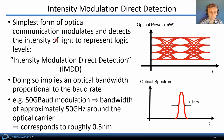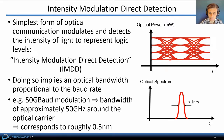The simplest form of optical communication over fiber operates by modulating and detecting the intensity of light to represent logic levels. This is called intensity modulation direct detection, or IMDD. Doing so implies an optical bandwidth proportional to the baud rate. For example, a 50 gigabaud 4-PAM optical waveform has low levels of light power corresponding to the low symbol levels and higher levels of optical power corresponding to the high symbol levels, with an optical spectrum bandwidth of less than a nanometer.